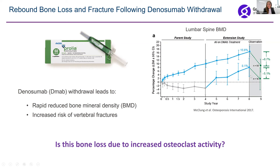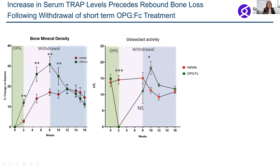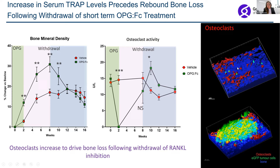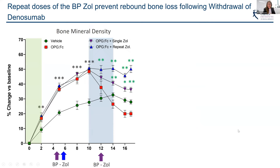We've recently modeled this in the lab — published as part of our Cell paper — and we can see that when we give denosumab we get more bone, but when we stop treatment bone is lost very quickly, just as seen in patients. This happens because there's a large increase in osteoclast activity during withdrawal. Importantly, this could be detrimental to cancer patients — because as shown earlier, more osteoclasts means more tumor growth. If a patient comes off denosumab and has dormant tumor cells in their skeleton, this could actually wake them up.